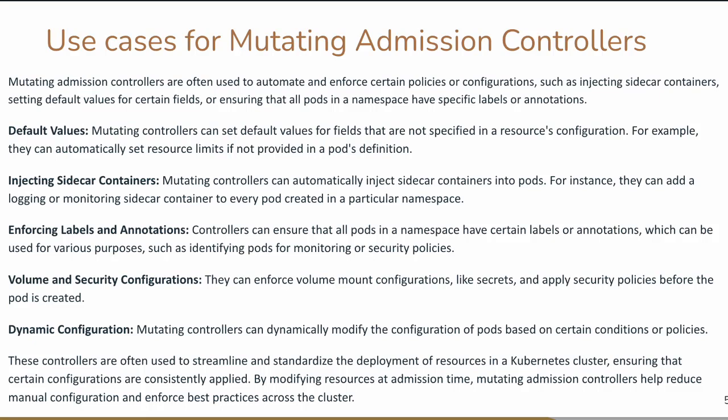Next is enforcing labels and annotations. Controllers can ensure that pods within a certain namespace have certain labels and annotations applied for identifying them for monitoring and security policies. For example, if you configure Prometheus to scrape any pod matching the label 'prometheus_monitoring: true', then Prometheus will automatically scrape its metrics. If you enforce this kind of policy, Prometheus will automatically scrape metrics for matching pods, which is useful in cases like out-of-memory issues — you no longer have to worry about injecting these variables manually.